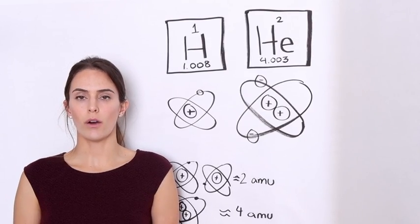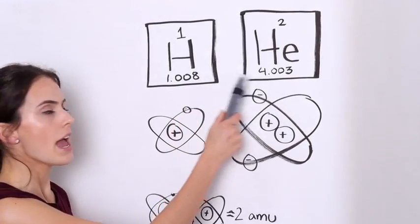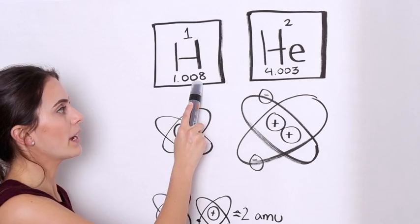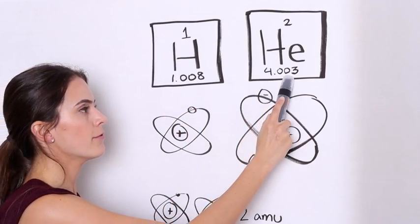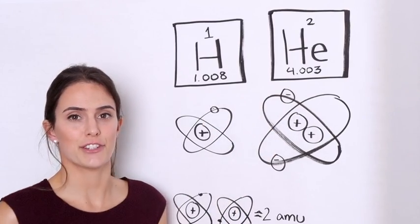The second reason came about when scientists compared the atomic masses of hydrogen and helium. They noticed that hydrogen only weighs one amu and helium four. That means helium is about four times the size of a hydrogen atom.